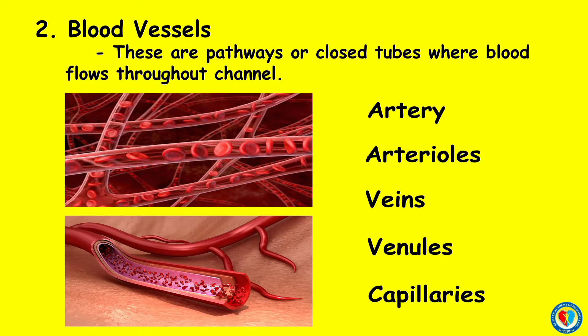The veins are any of the tubes forming part of the blood circulation system of the body, carrying in most cases oxygen-depleted blood toward the heart. Venules are very small veins, especially those collecting blood from the capillaries. Capillaries are the fine branching blood vessels that form a network between the arterioles and venules.